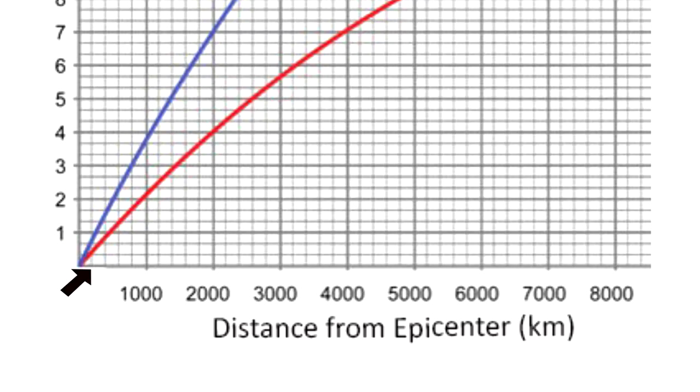Each line on the distance scale is 200 kilometers each: 200 kilometers, 400 kilometers, 600 kilometers, 800 kilometers, 1,000 kilometers, and so on. Each line on the time scale is 20 seconds: 20 seconds, 40 seconds, 60 seconds or 1 minute, and so on.